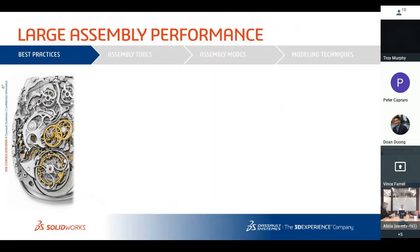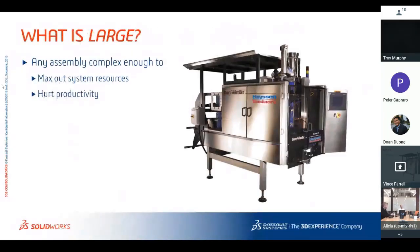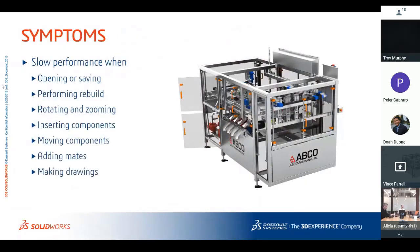First, let's go into best practices. The first question is: what is 'large'? Some users talk about maybe a 200-part assembly — that's not necessarily large by definition. But if it's slowing down your system resources and taking a long time to rotate, open, or open a part, that's a large assembly. It's hurting your productivity. Symptoms include slow performance when opening or saving, performing rebuild, rotating and zooming, inserting or moving components, adding mates, and making drawings.